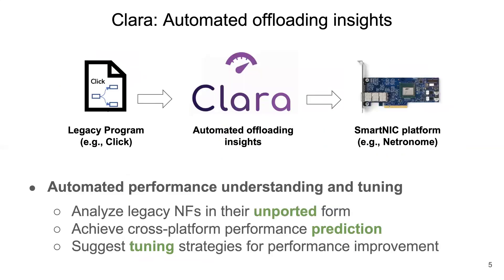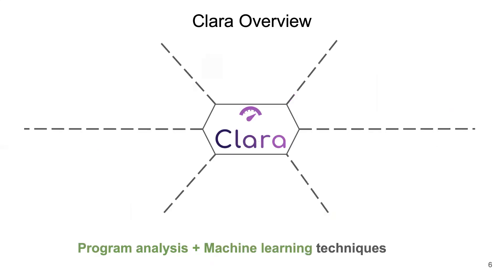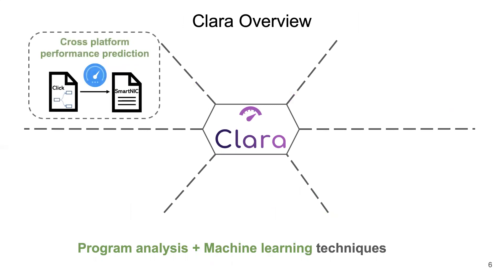This has led us to our research question: whether we could build a tool to analyze offloading performance before the manual porting process, and automatically suggest SmartNIC tuning strategies to improve offloading performance. We have developed a tool called CLARA, which aims at providing automated offloading insights. CLARA could analyze NFs in their unported form — for instance, NFs written in Click — then achieve cross-platform performance predictions as well as automatic tuning strategy suggestions. CLARA leverages a combination of program analysis and machine learning techniques, which generalize several types of offloading insights. One of our focuses today is on cross-platform performance prediction, which serves as the infrastructure of CLARA.